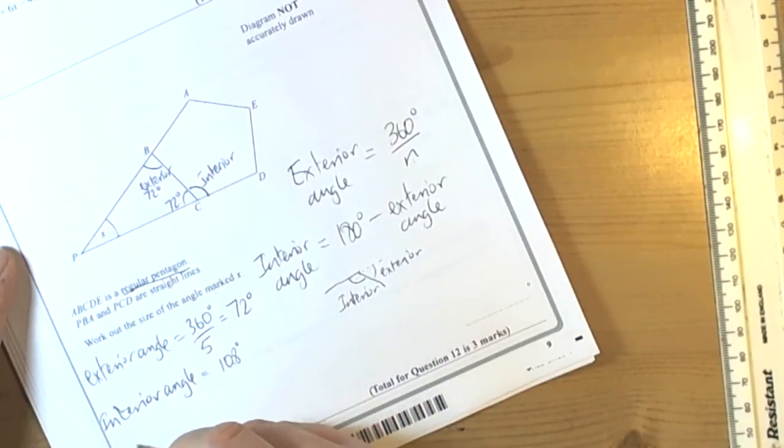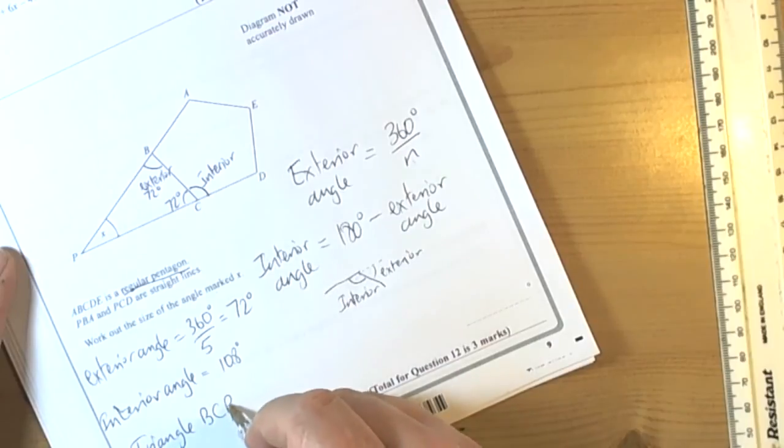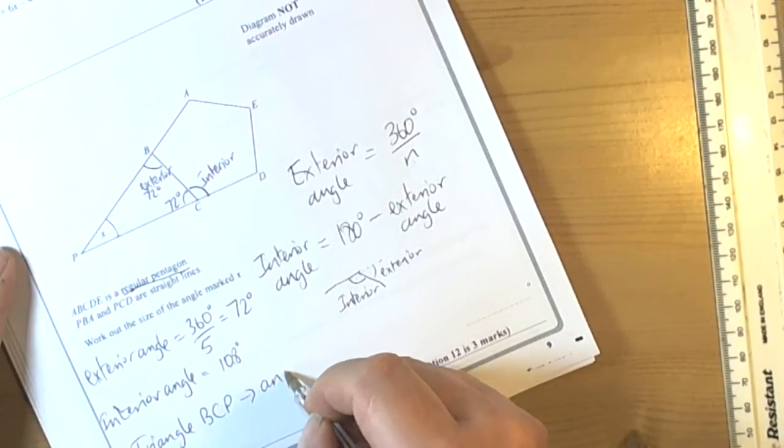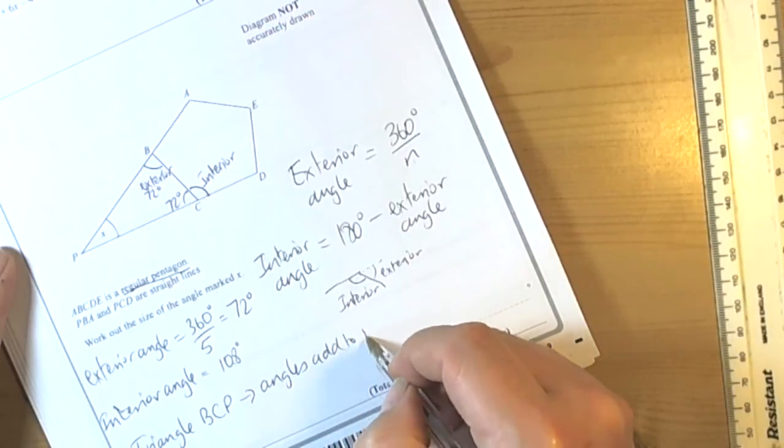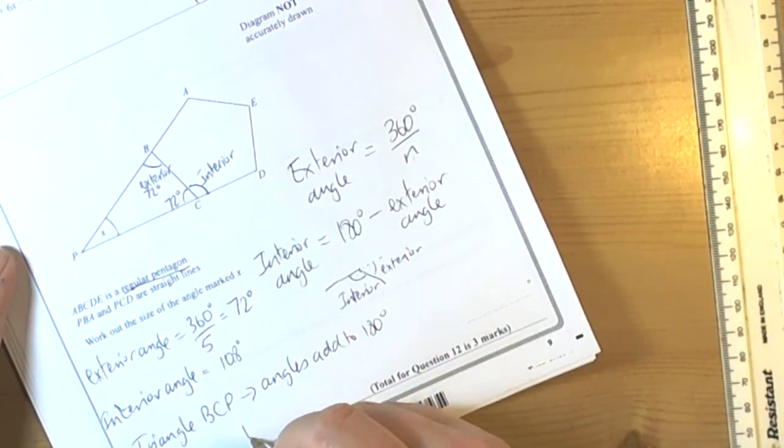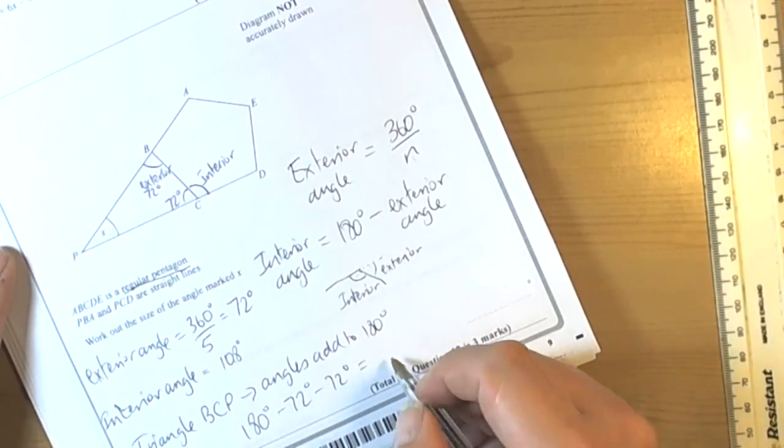So we've got triangle BCP. Angles add to 180 degrees. So if we do 180 degrees minus the 72 degrees minus the 72 degrees, then we'll end up with the answer we need.